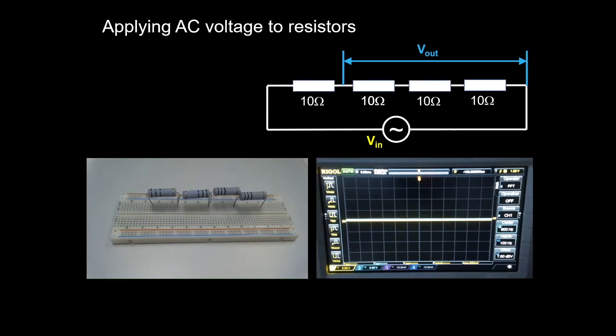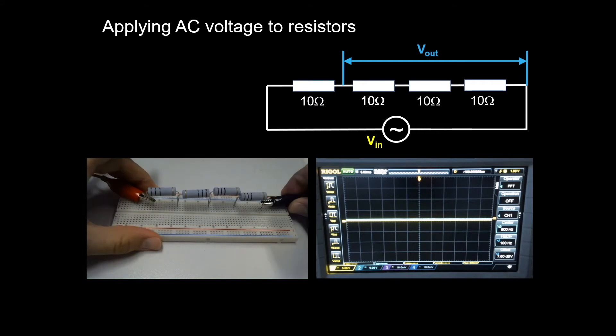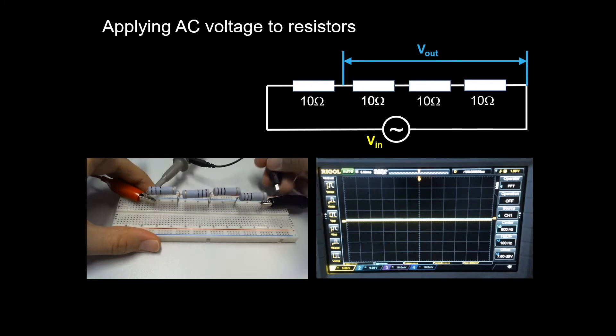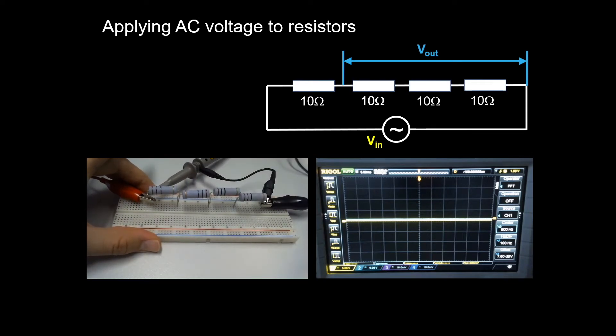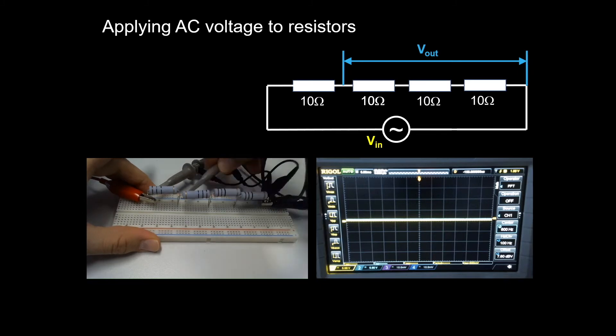Let us put the power source to use. Here are four 10-ohm resistors connected in series. Now we're going to connect the power source to it and also the probes for the oscilloscope. Probe number one goes to the input voltage, and then probe number two we connect it to the last three resistors.